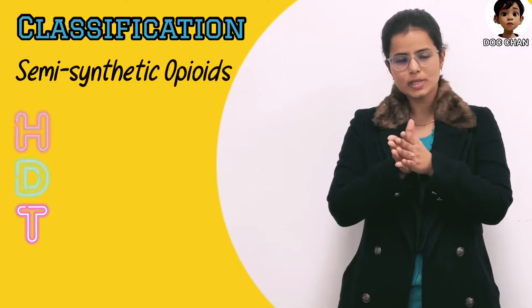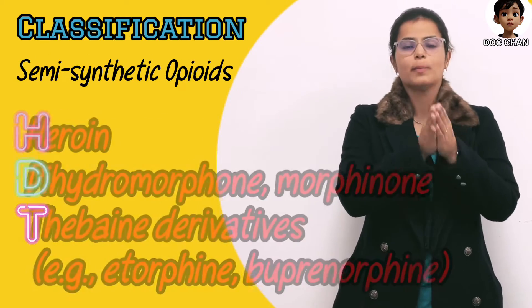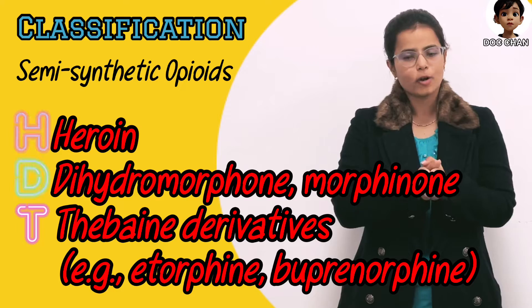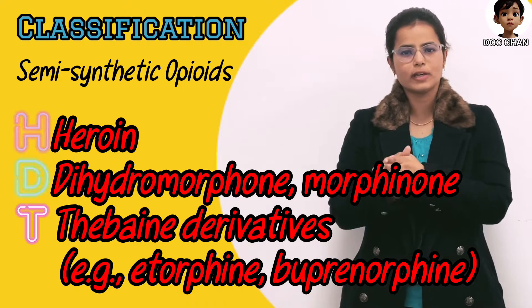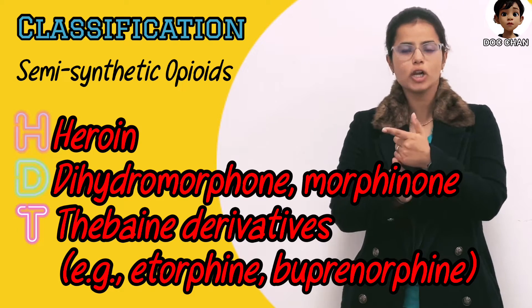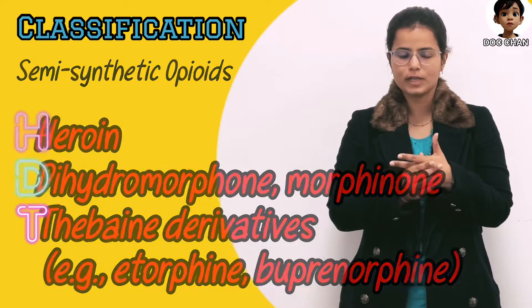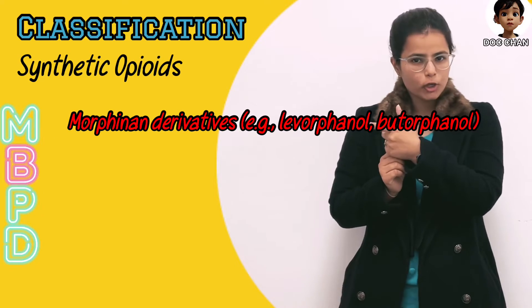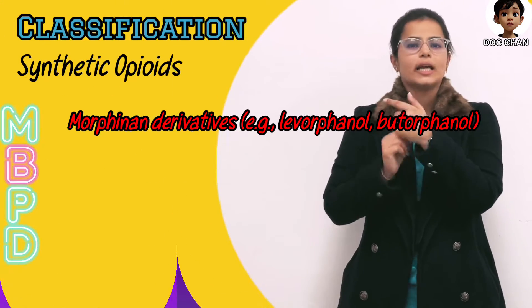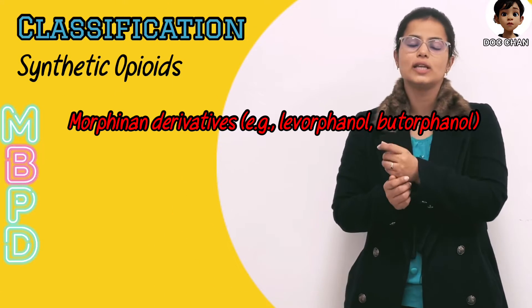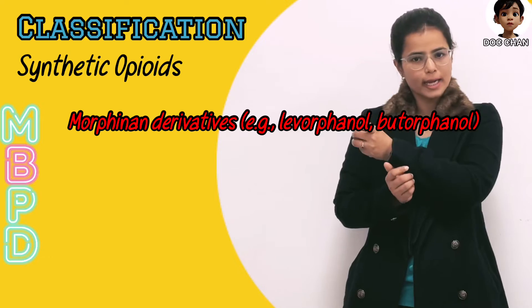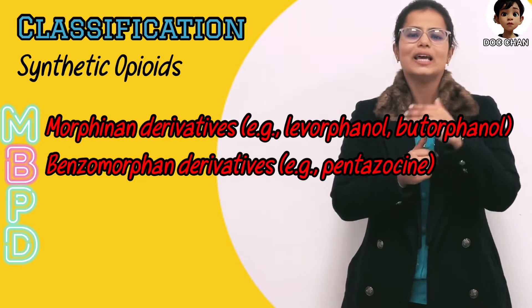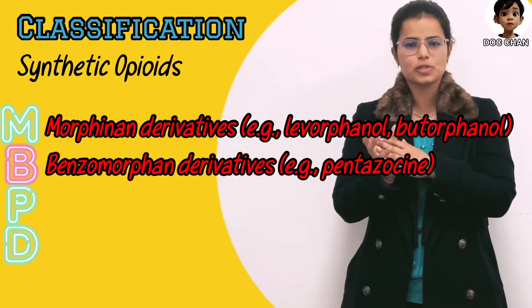Coming to semi-synthetic, it includes morphinol, dihydromorphine, heroin, and thebaine derivatives. Thebaine derivatives are etorphine and buprenorphine. Then is synthetic — morphinol derivatives, that is levorphanol and butorphanol. Levorphanol is the long-acting opioid, and then benzomorphan, that is pentazocine.